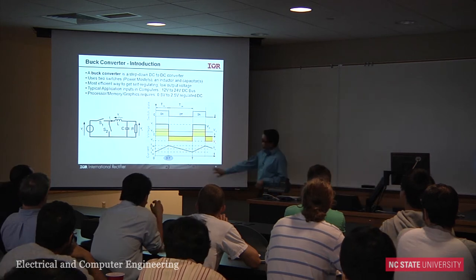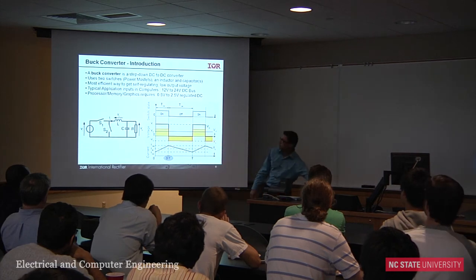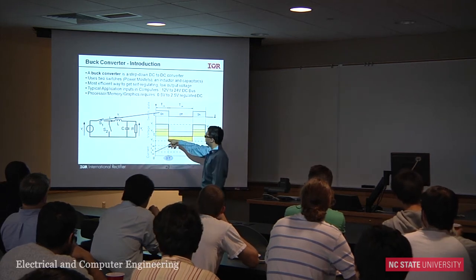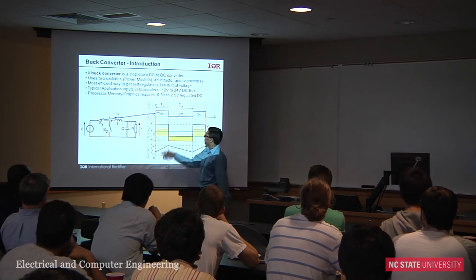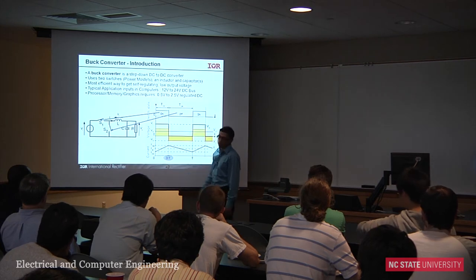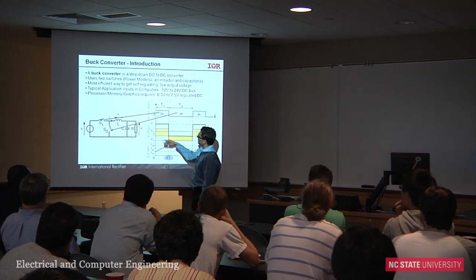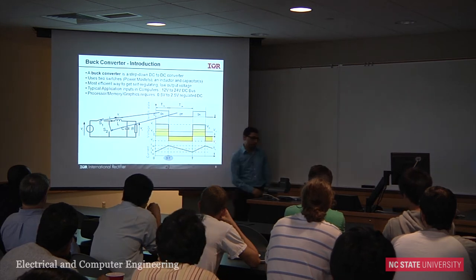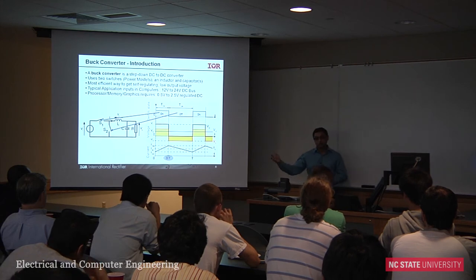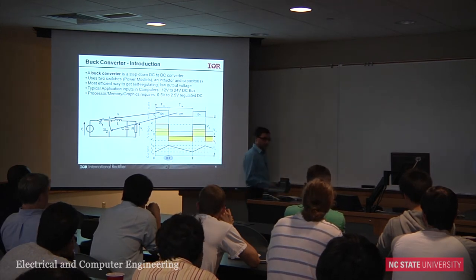When S1 turns on, current charges in the inductor — you put V_in across the inductor, the inductor charges, and the output voltage starts going up. When S2 turns on, the current in the inductor goes down. The time S1 is on versus S2 is on is called duty cycle D. The output voltage is proportional to V_in times D, so we design ICs to achieve the target D — for example, 10 V in and 1 V out gives D = 0.1.